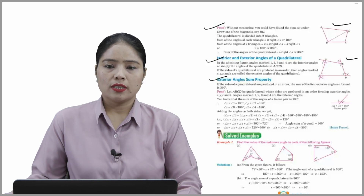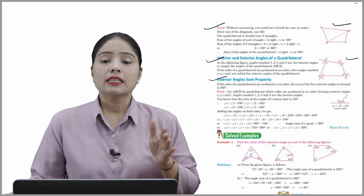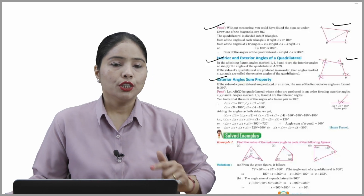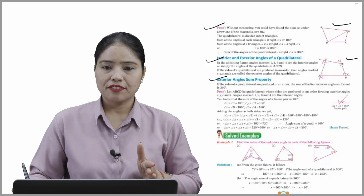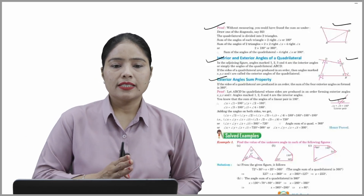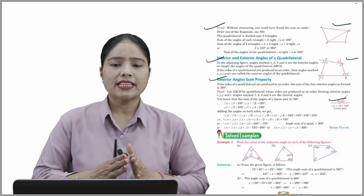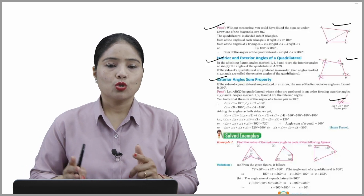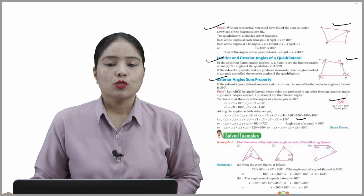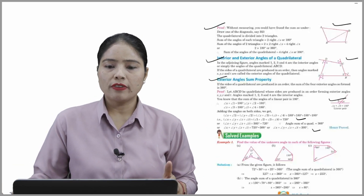Exterior angle sum property: if the sides of a quadrilateral are produced in order, the sum of the four exterior angles so formed is 360°. Proof: let ABCD be a quadrilateral whose sides are produced in order forming exterior angles x, y, z, and t, and interior angles 1, 2, 3, and 4. Since each exterior and interior angle forms a linear pair: x+1=180°, y+2=180°, z+3=180°, t+4=180°. Adding all: (1+2+3+4)+(x+y+z+t)=720°. Since angle sum of a quadrilateral is 360°, therefore x+y+z+t=360°.